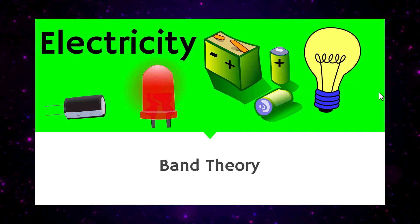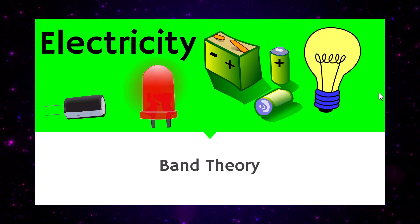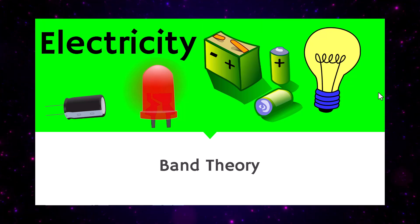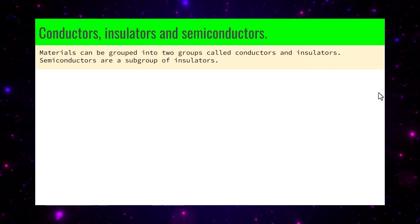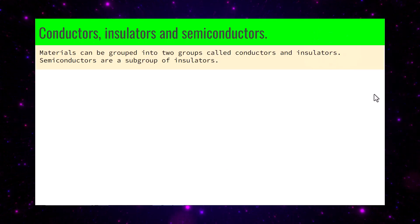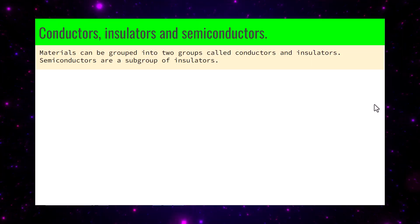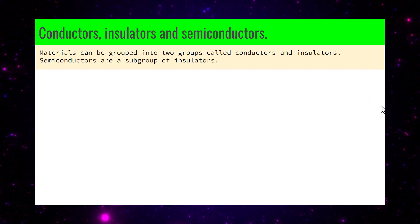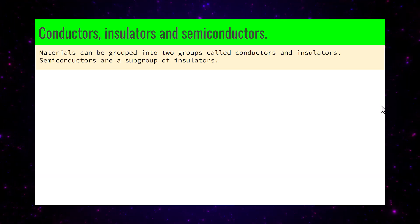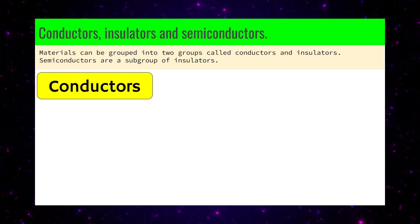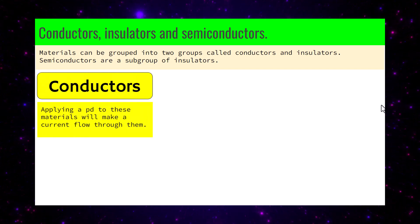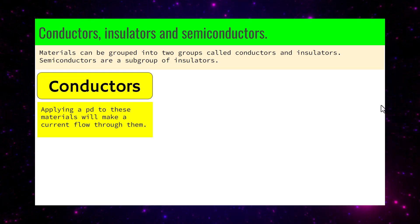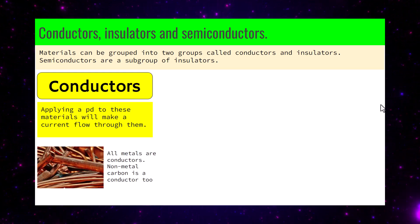Let's take a look at band theory and see how it helps us explain how things conduct electricity. Materials can be grouped into two groups called conductors and insulators. Semiconductors are a subgroup of insulators. Applying a potential difference to conductors will make a current flow through them.